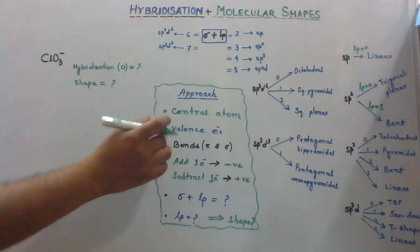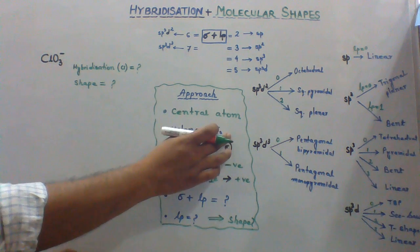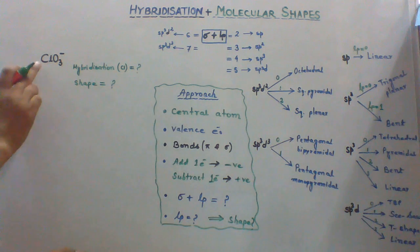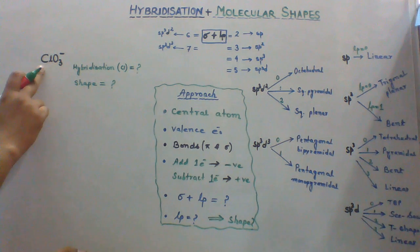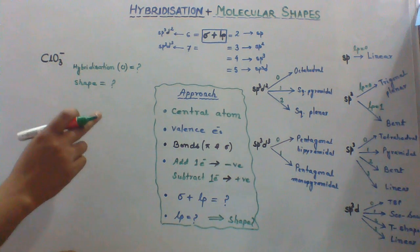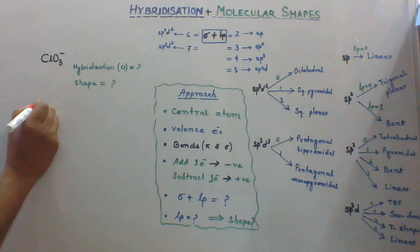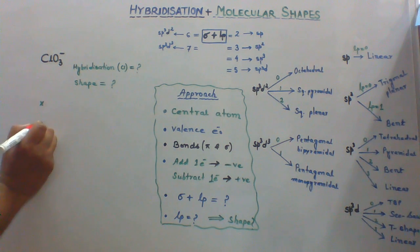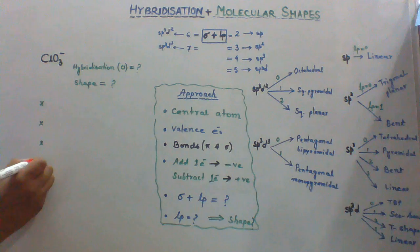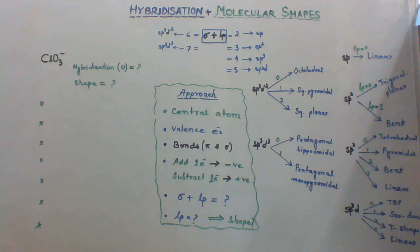Next, we have to see the total number of valence electrons present on the central atom. Chlorine belongs to group 17 and it does have 7 electrons in its valence shell. So those 7 electrons we are going to write as 7x.